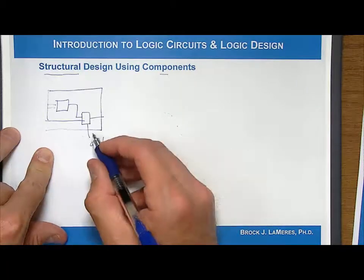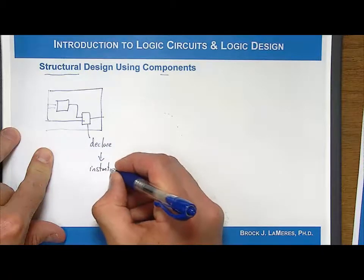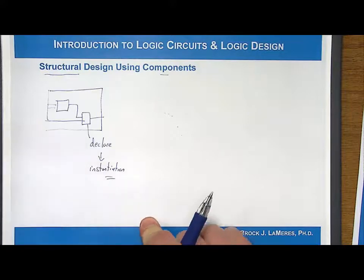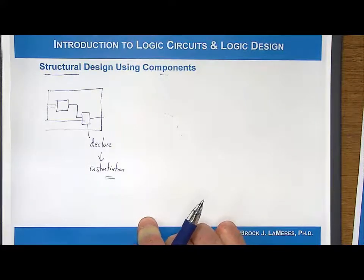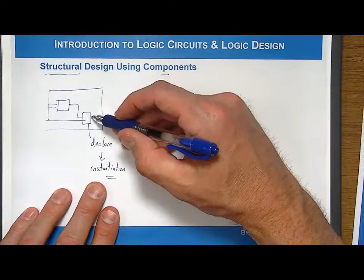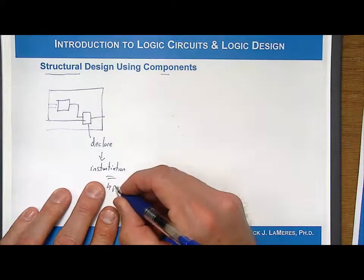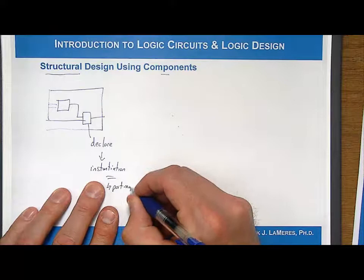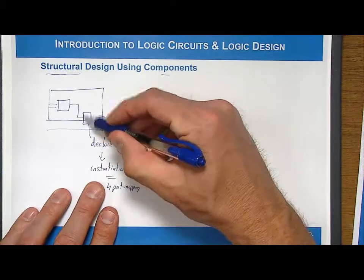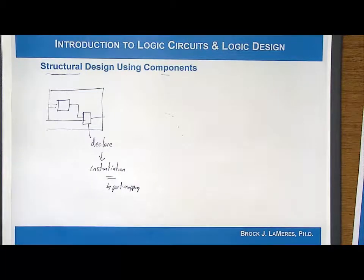And then when we go to use them, we do something called instantiation. And instantiation can be done numerous times. It can be done once. It can be done a million times. But the instantiation is where we actually put these subsystems down into our design, and then we need to connect them accordingly. So we have this notion of what we call port mapping. So when we say structural design, what we're really talking about is instantiating other VHDL systems into a higher-level system in order to accomplish functionality.